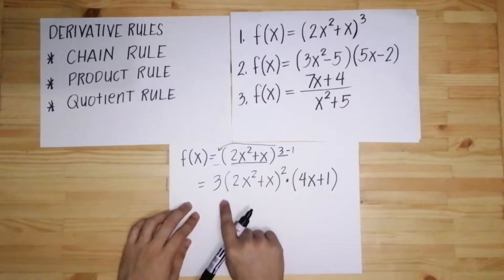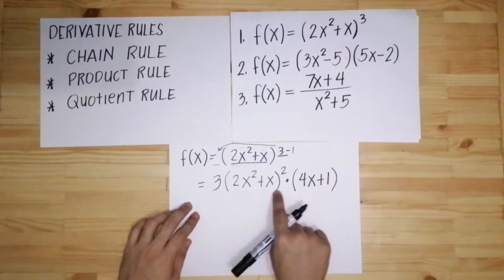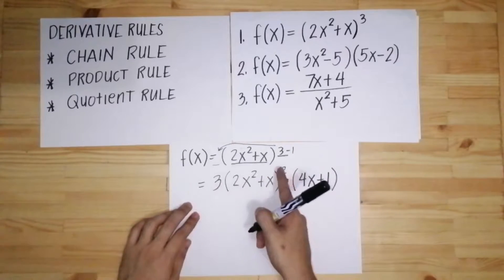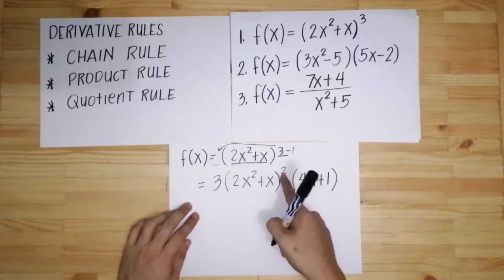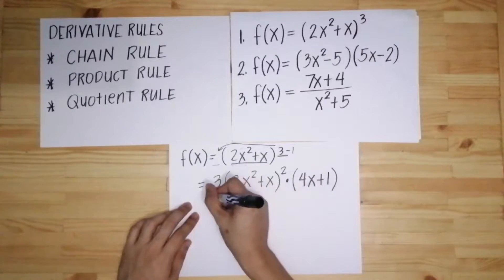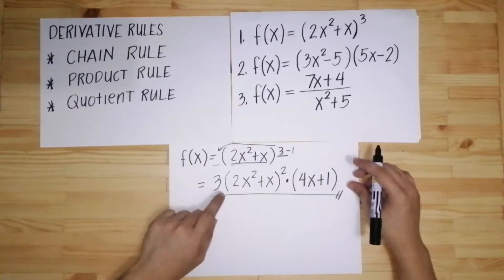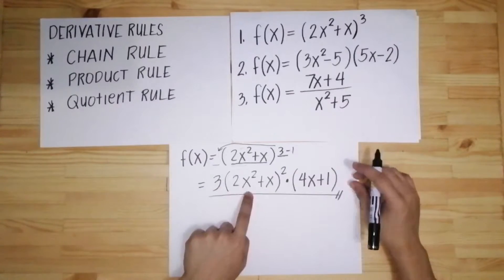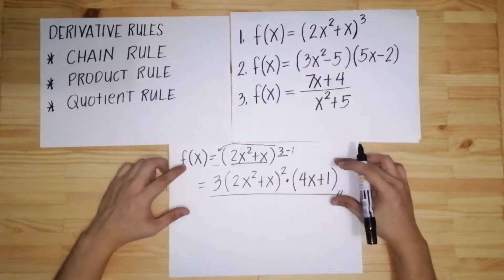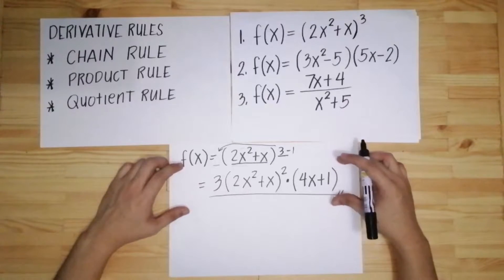And then, after mo magawa ito, yung proseso na to, yung pag-multiply dito, copy, minus 1, then get the derivative, this will be your final answer. There is no need to expand this binomial kasi ahaba lang din yan. So that's how you do the chain rule.